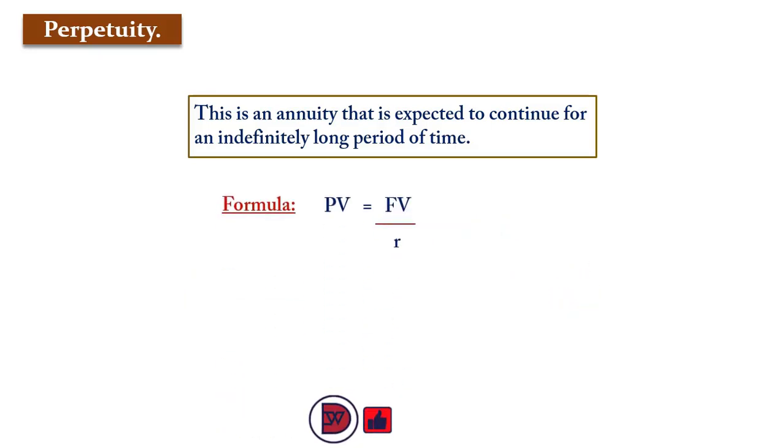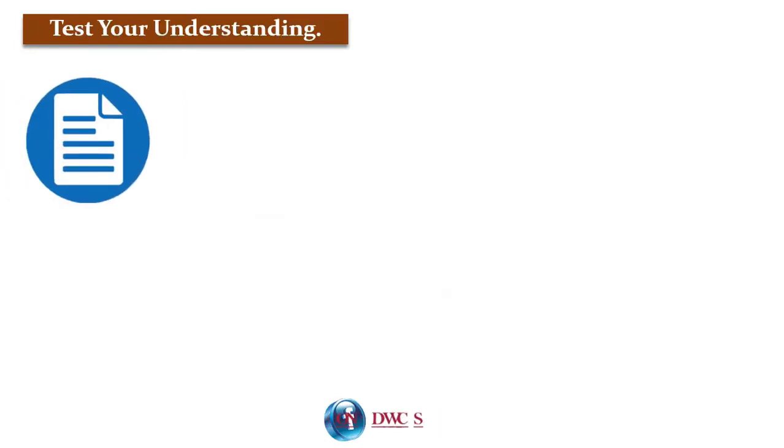Its formula is: the present value equals future value divided by the rate. So PV is the present value, r is the rate of interest. When we test our understanding...